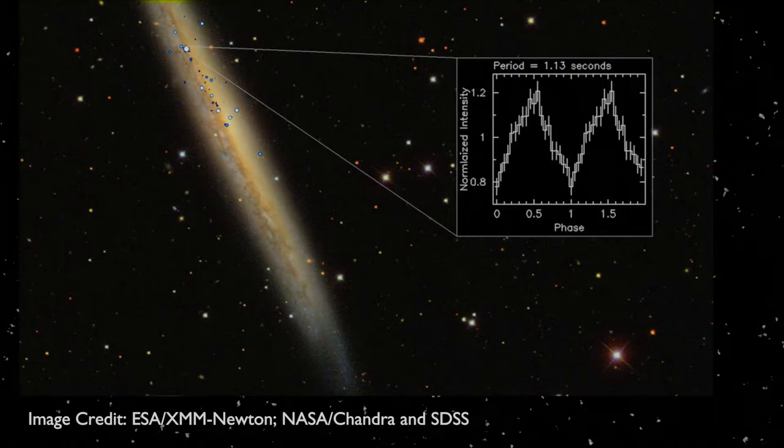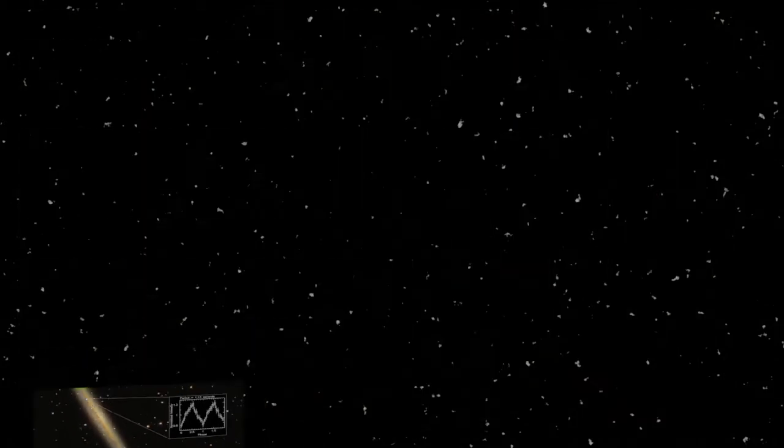This is an ultraluminous x-ray source that until NuSTAR observed it was thought to actually be a black hole. As it turns out, the data NuSTAR provided suggested otherwise, that it is actually an accreting Neutron Star. I studied many accreting Neutron Star sources. Many of them are actually quite dim, and most of them are actually transient. And this source in particular though, being ultraluminous, opened my work up quite a lot.